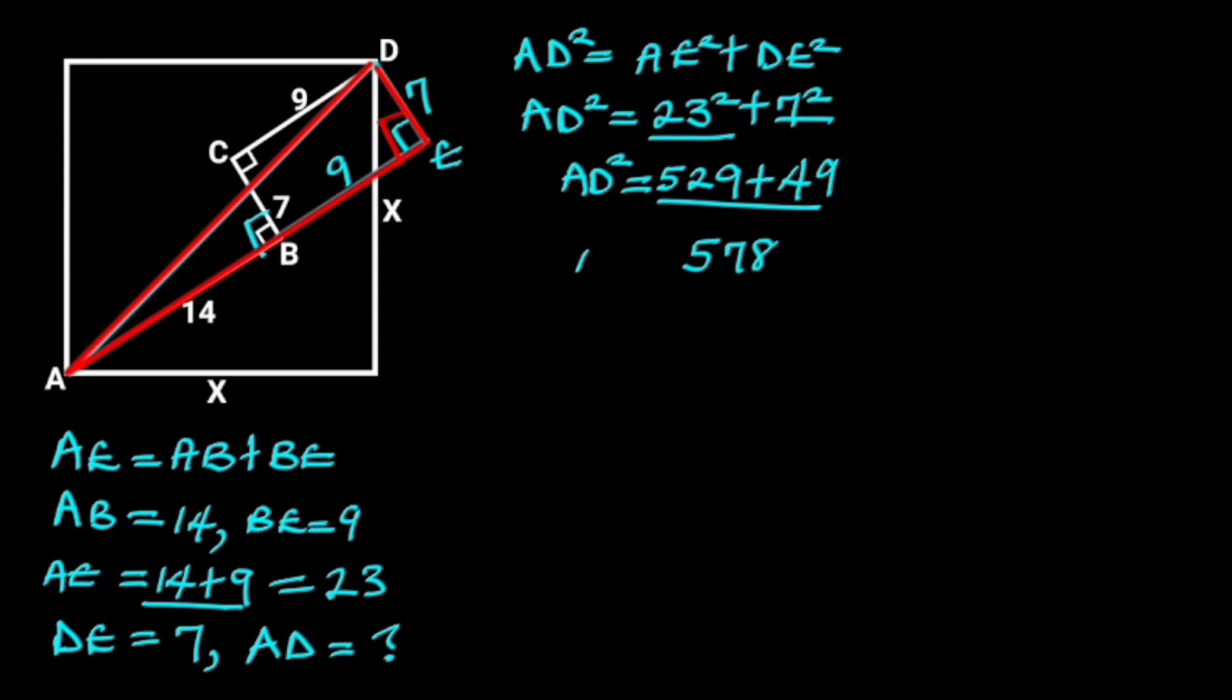Hence, AD squared is equal to 578. Note that the diagonal AD will be the square root of 578, but we will make use of the value of AD squared as we go further.